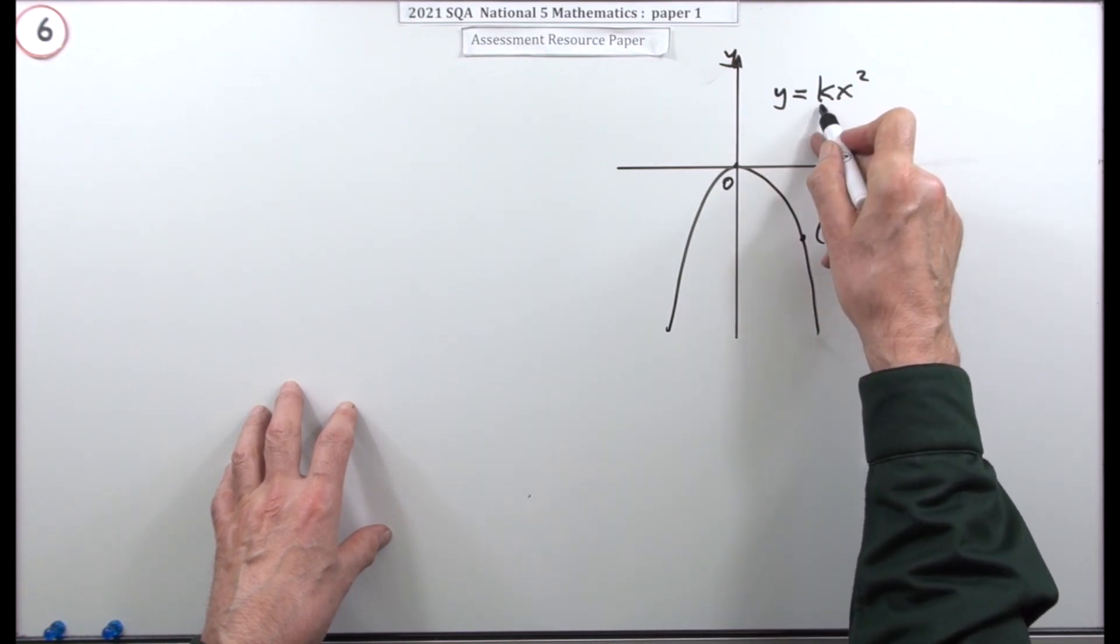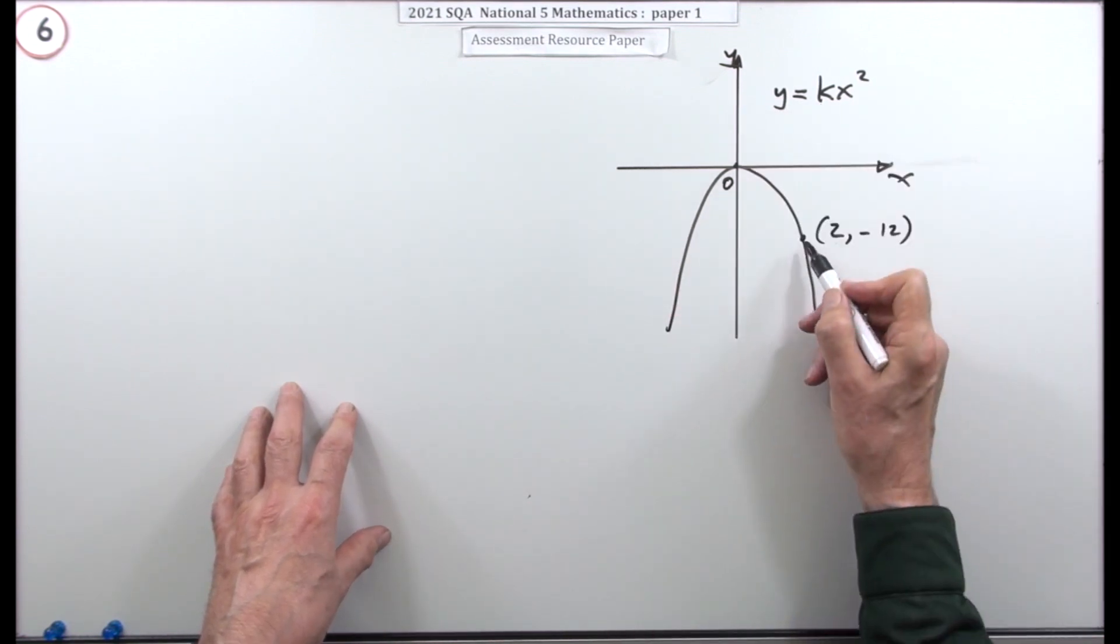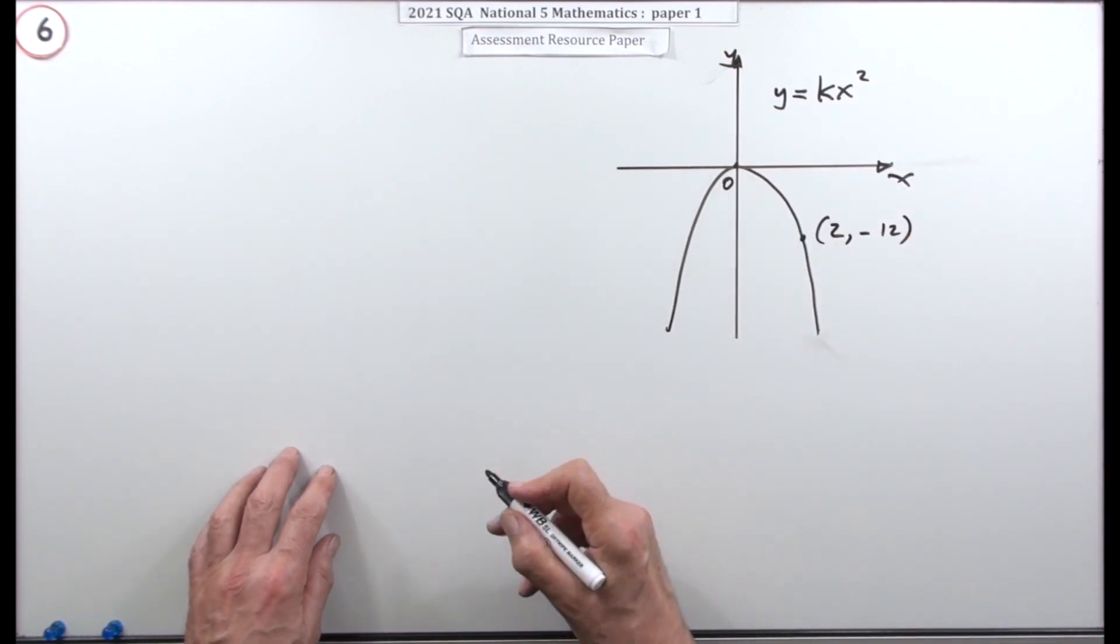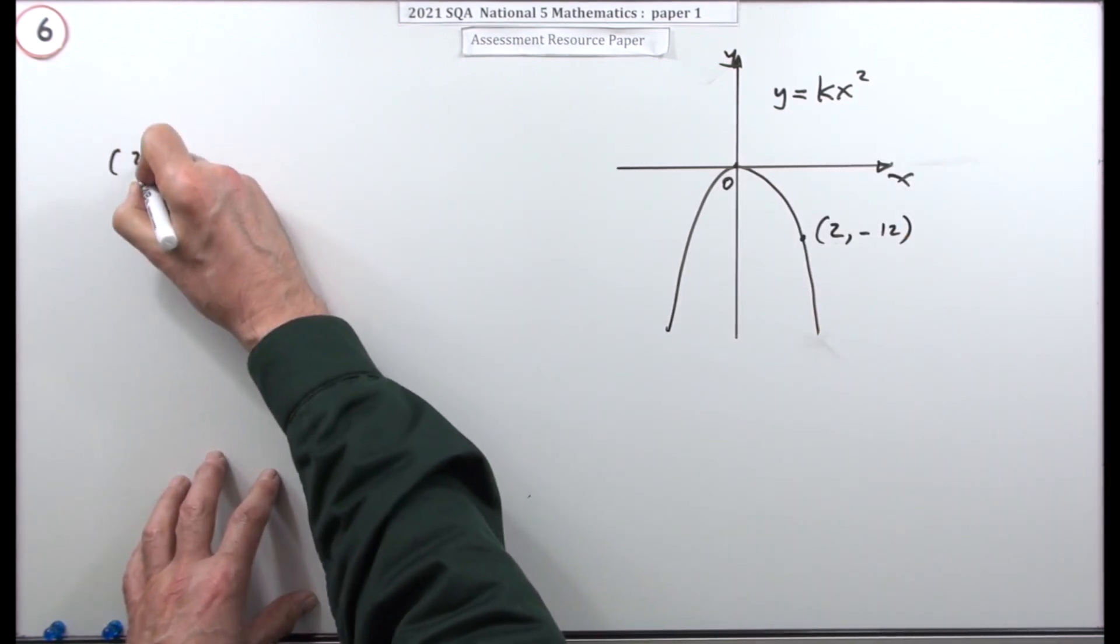All you need to do is substitute those values in for x and y, and that'll leave k, because that equation is going to be true for every single point in the curve, so it must be true for that point there.